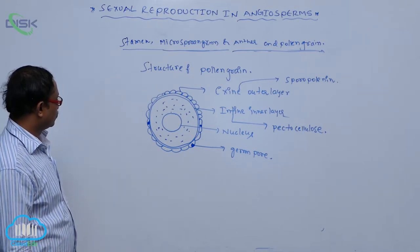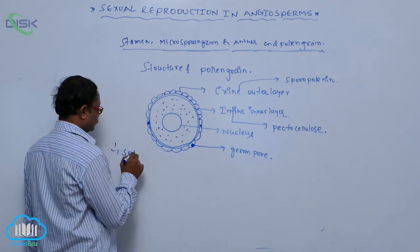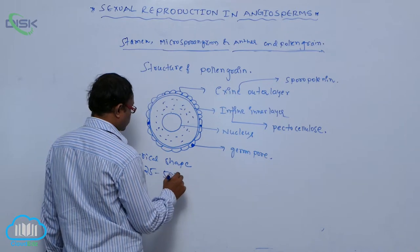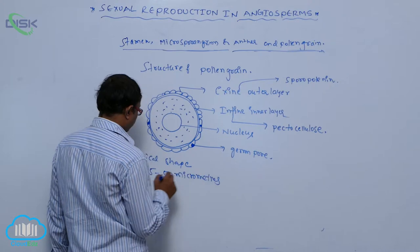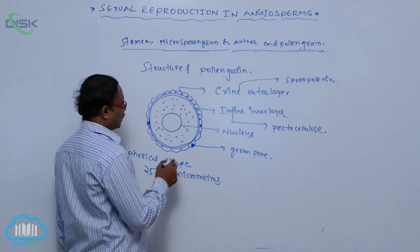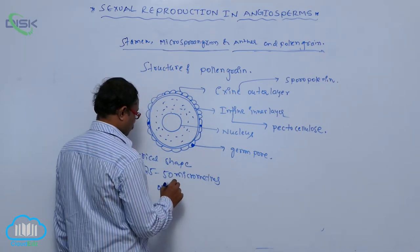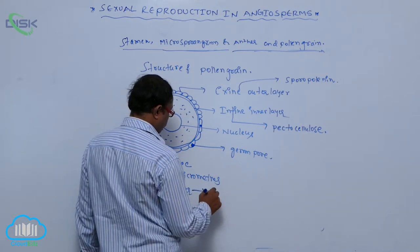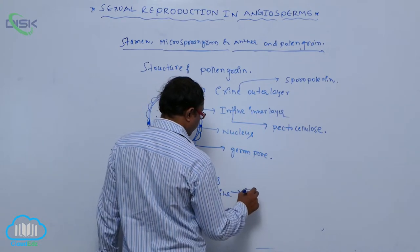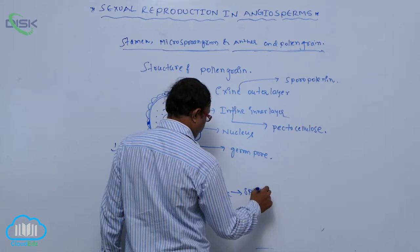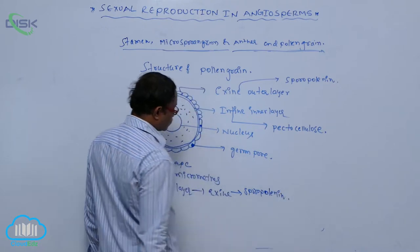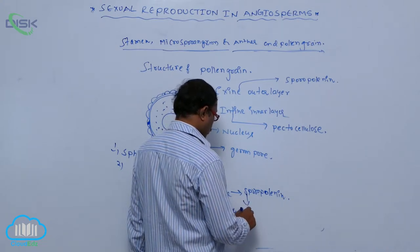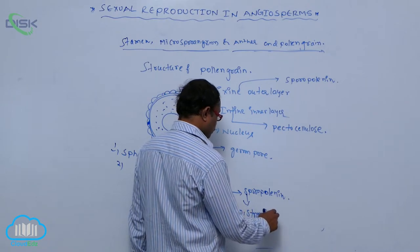Generally, the structure of pollen grains: pollen grains are typically spherical in shape. They are 25 to 50 micrometers in size. The outer layer is known as the exine. The outer layer of pollen is known as exine. It is made up of sporopollenin. The exine is a rough and strong layer because it is made up of sporopollenin.